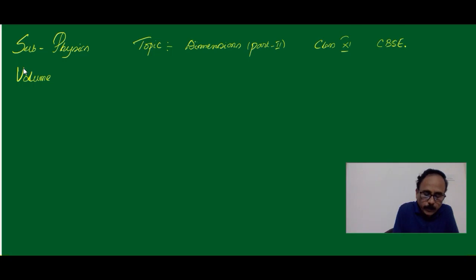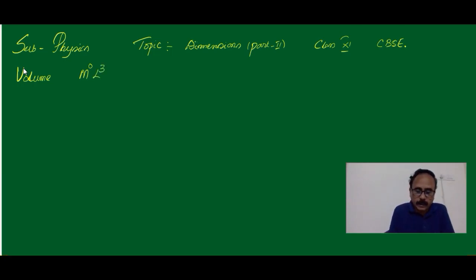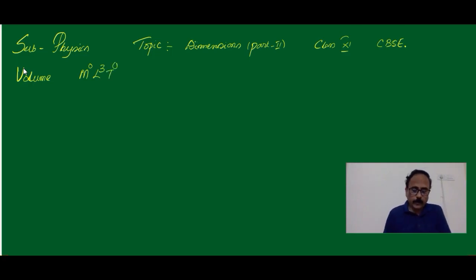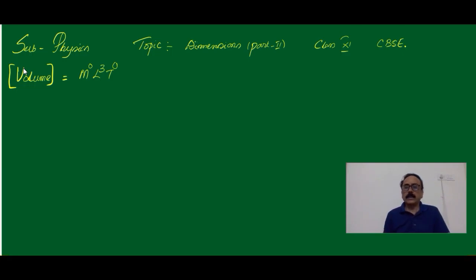Volume — the dimensions will have M0, L3, because it is the product of three lengths and there is no T term. Therefore, the Volume Dimensional Formula is M0, L3, T0.